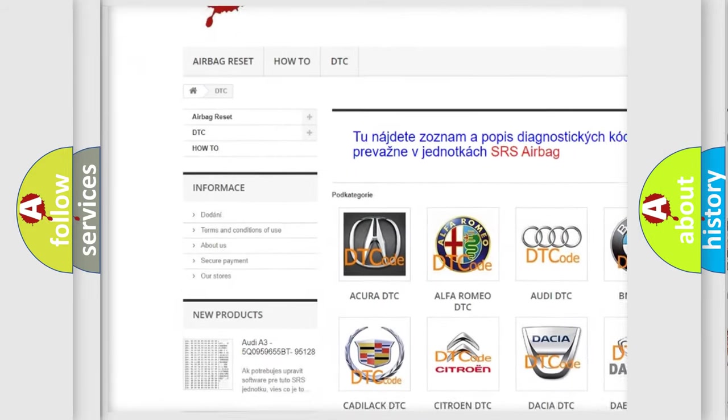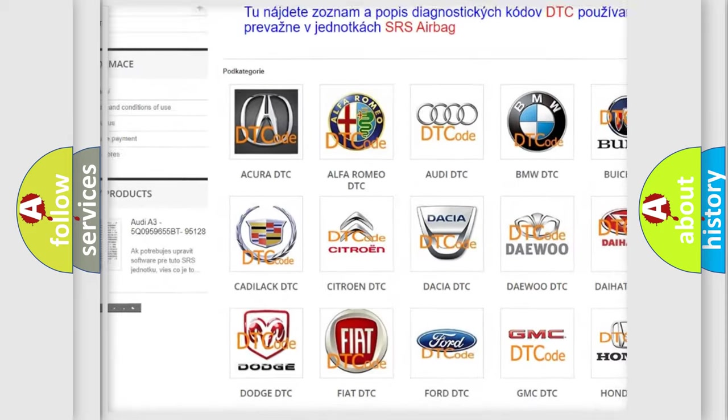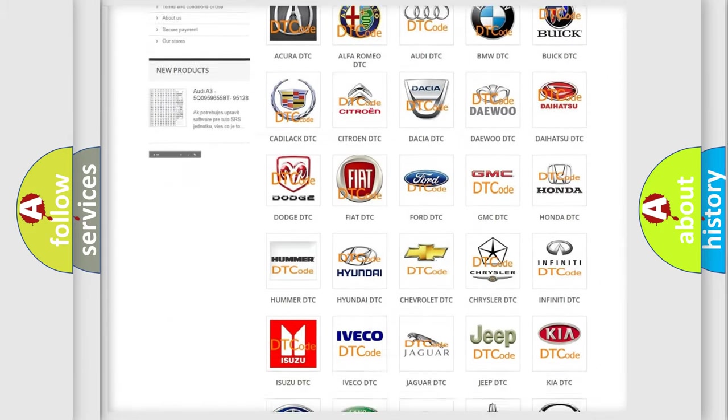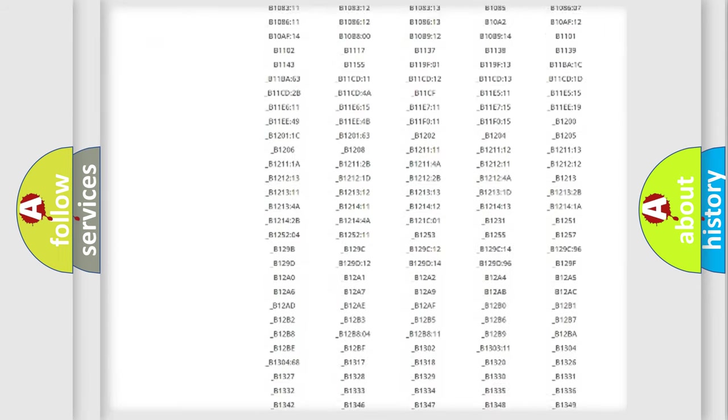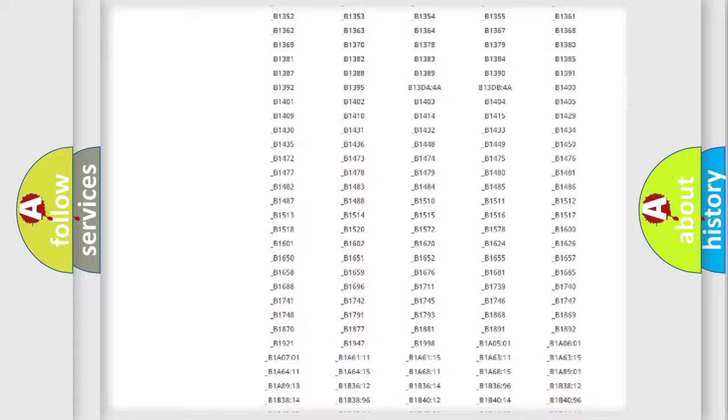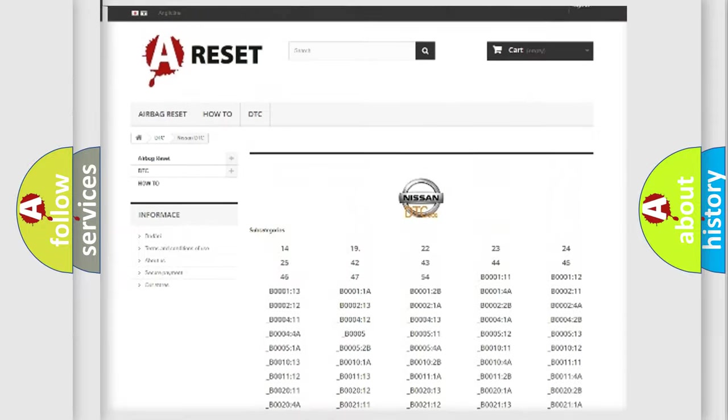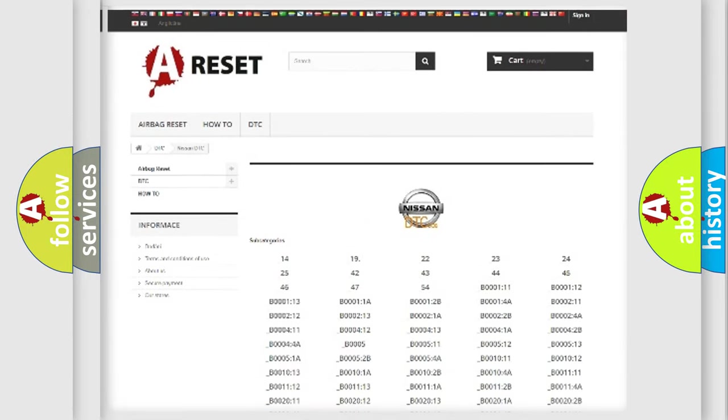Our website airbagreset.sk produces useful videos for you. You do not have to go through the OBD2 protocol anymore to know how to troubleshoot any car breakdown. You will find all the diagnostic codes that can be diagnosed in Nissan vehicles, and also many other useful things.